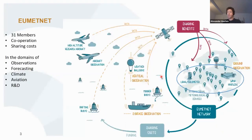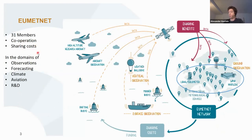EUMETNET is the grouping of European meteorological and hydrological services. It has 31 members and fosters cooperation; it is also a platform for members to share costs when operating the observing system. The main domains cover observations — probably the most important part — but also forecasting, climate, aviation, and research and development.